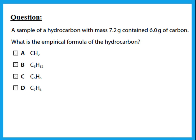A sample of a hydrocarbon with mass 7.2 grams contains 6 grams of carbon. A hydrocarbon contains only hydrogen and carbon. The total mass is 7.2 g, carbon is 6 g, so hydrogen is 1.2 g. To find the empirical formula, first divide each mass by its atomic mass: carbon ÷ 12, hydrogen ÷ 1.